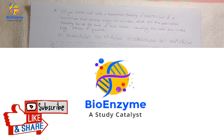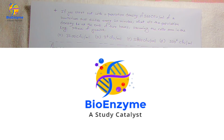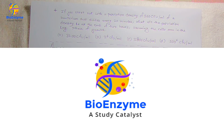The second question is more complex. It states: if you start with a population density of 200 CFU per ml of a bacterium that divides every 20 minutes — CFU stands for colony forming unit, the unit used for how many bacteria are needed to form a colony — what will the population density be at the end of two hours?